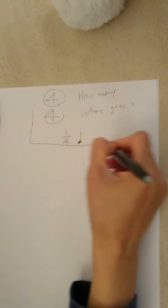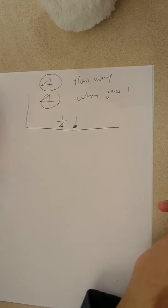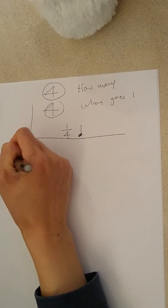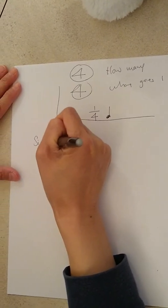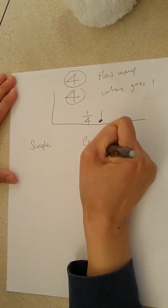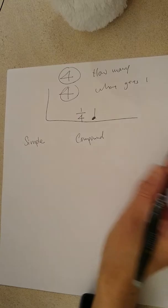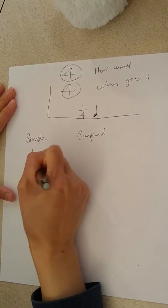But unfortunately, it doesn't stay this simple forever. We separate time signatures into two categories. We have the simple. We have the compound. Exactly what's simple? The basic value is divided into two. Ta-da!